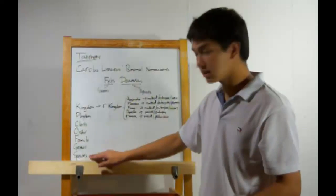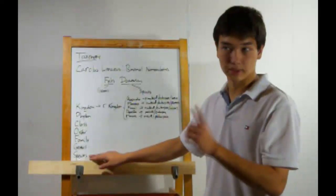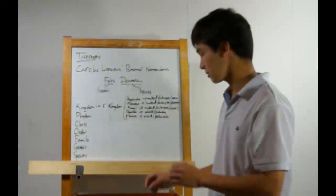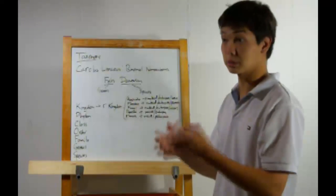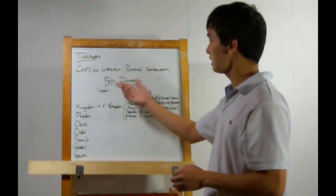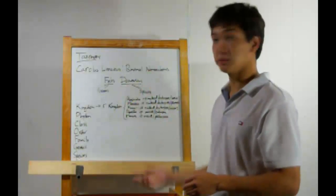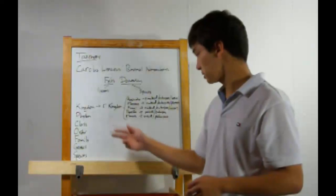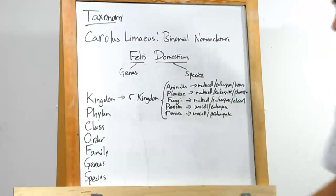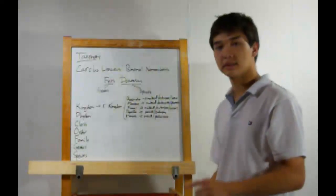When you get down to species, there's only one thing you can refer to, and that is the actual species itself. As you can see, the system of binomial nomenclature uses the two most specific groupings.